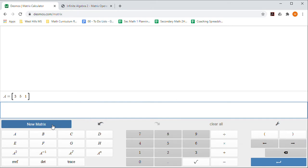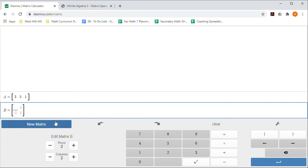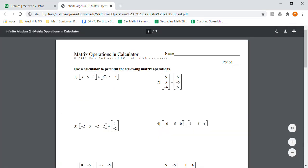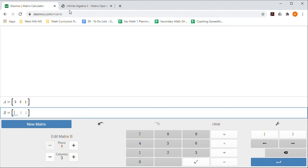We need to put in a second one so I'm going to push new matrix again. This one is also one row and three columns, so I'm going to put one row, three columns, and the numbers here are 6, 5, and 3. So I'm going to do 6, 5, 3 and now I have my second matrix.